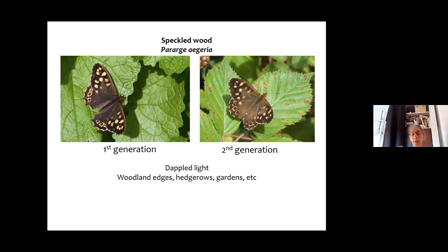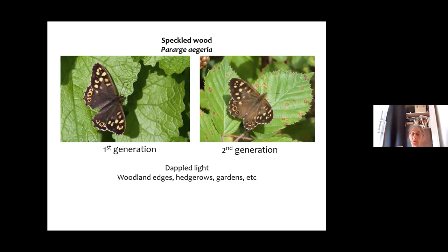The males will compete for dappled light — that's where they hang out hoping to catch a female flying past, so dappled light is an important resource for them. Sometimes you'll see them chasing each other, spinning round and round, flying up as they fight, which could also be a male trying to mate with a reluctant female.